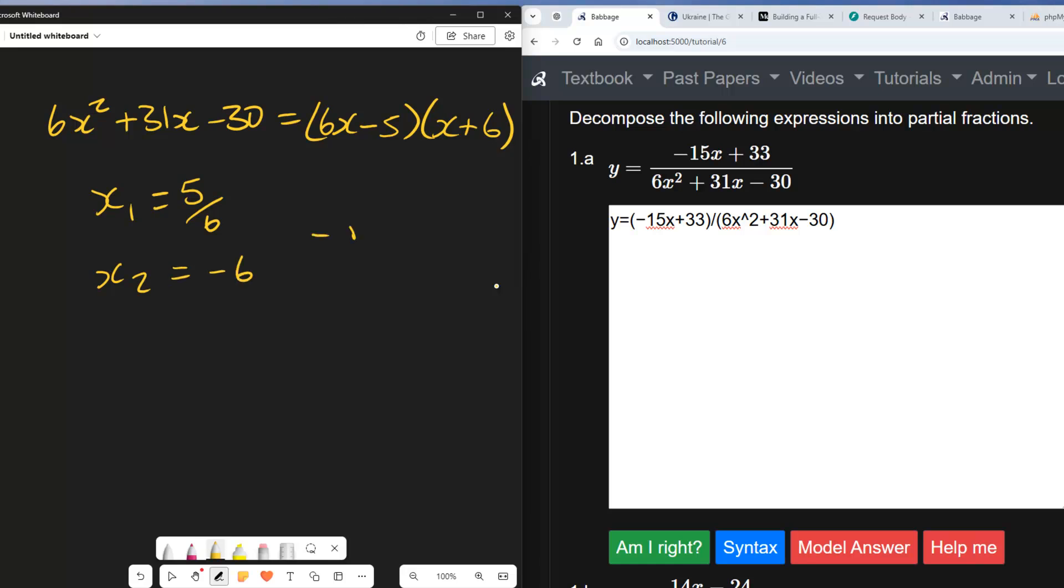Now these are the roots of the equation, that is to say, these are the values of x that make this expression 0. Now if x equals 5/6, what I can say is 6x - 5 is equal to 0. And if x is equal to -6, I can say that x + 6 is equal to 0.